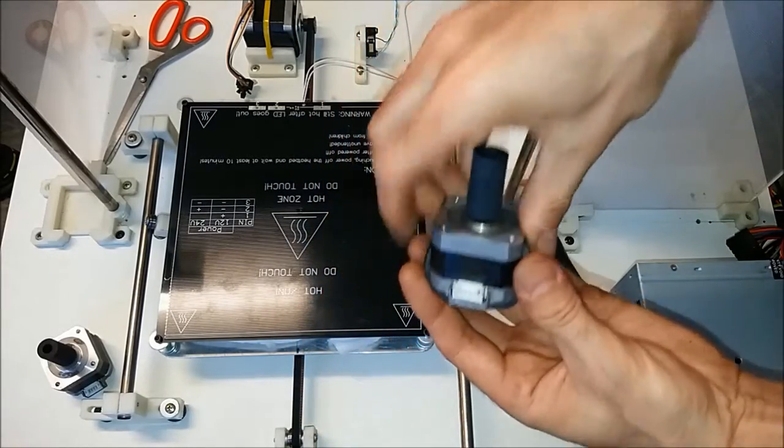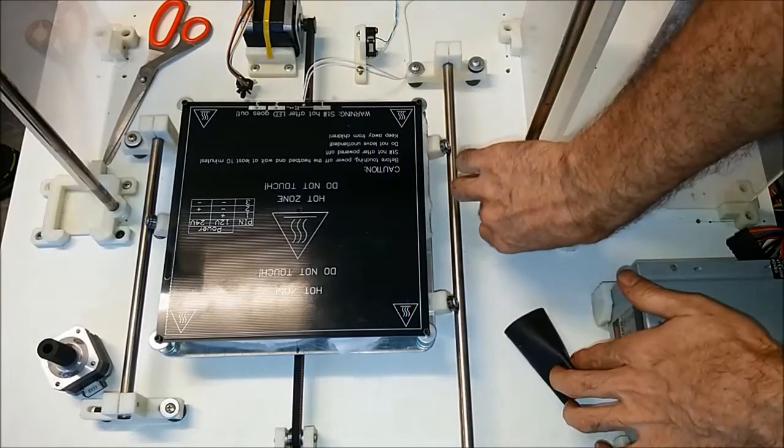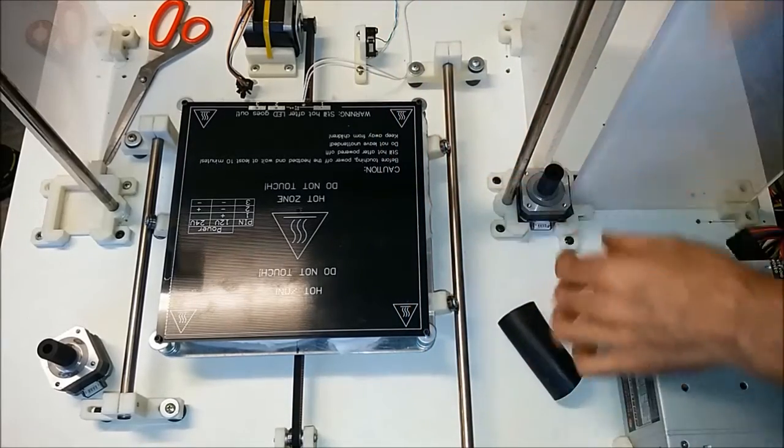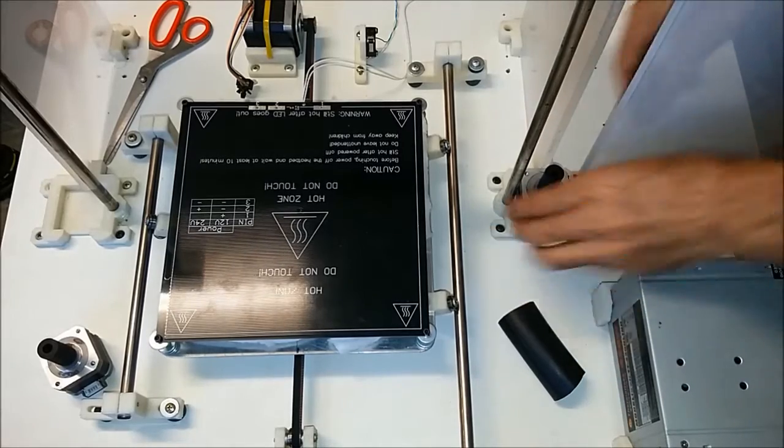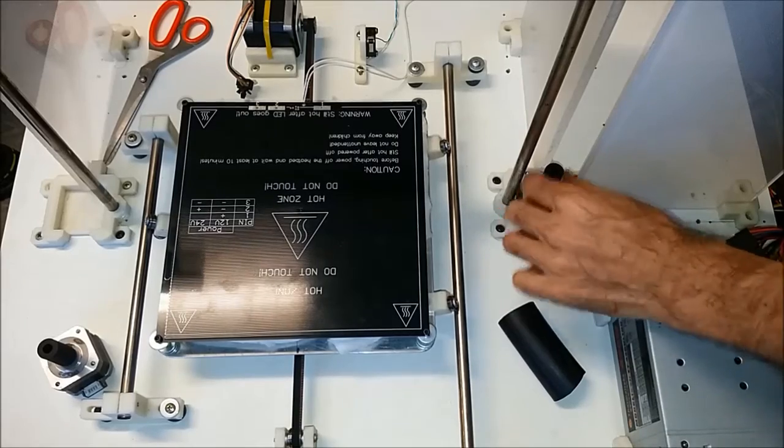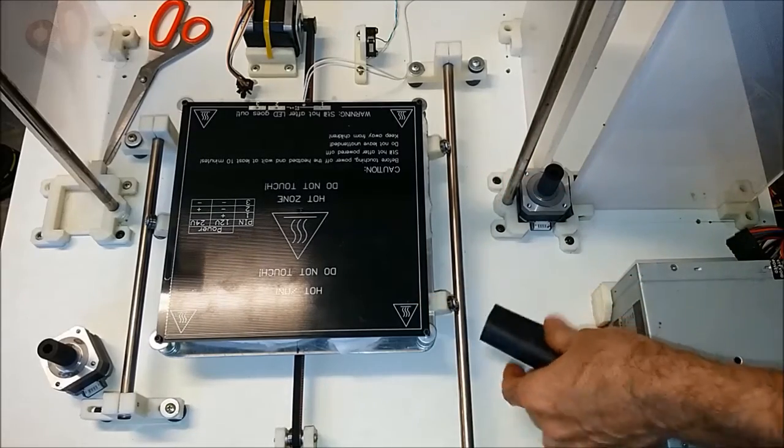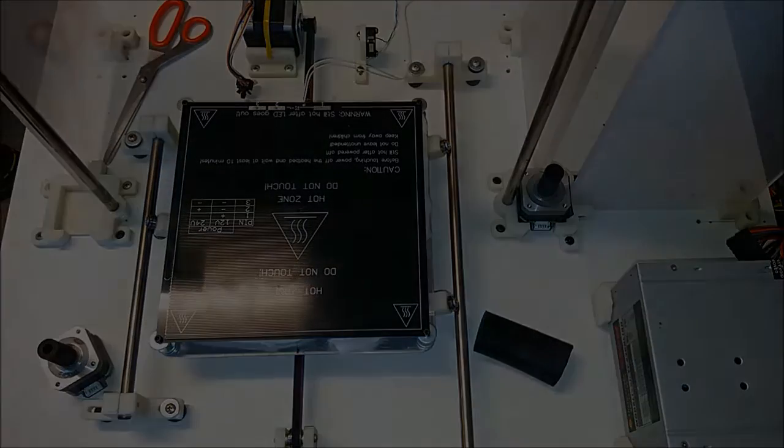Just plonk it into one of the Z-mount holes from the side of the printer here. All the rubber is supposed to do is just stop the vibration and also just stop the motor from spinning around in there and clanking around. We'll cut another piece for the other motor and move on to the next step.